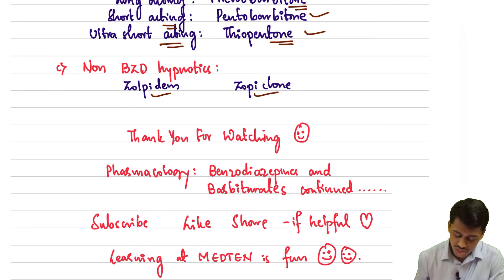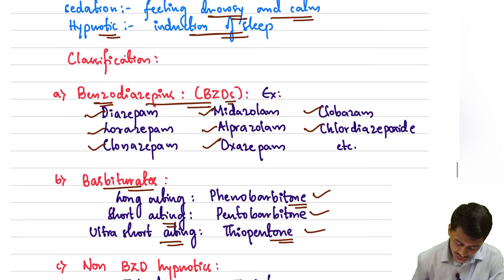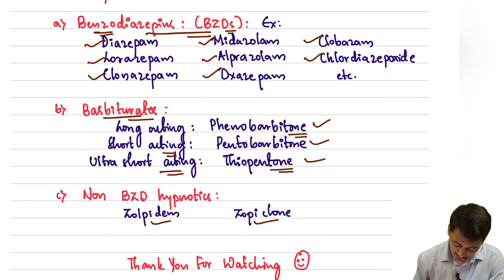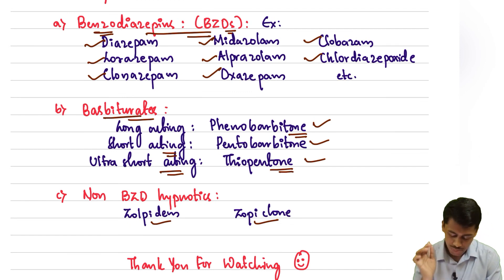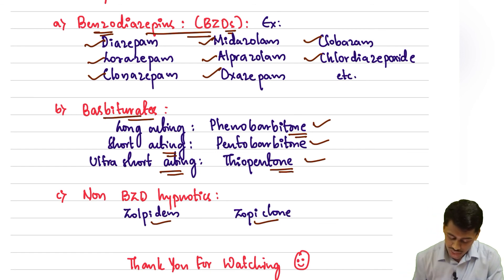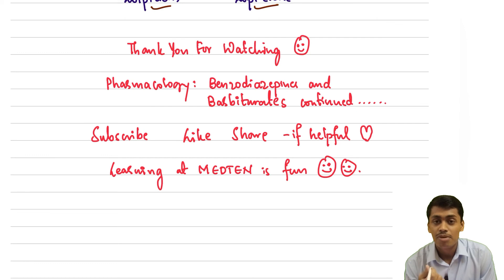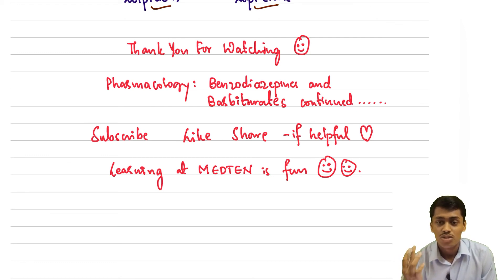So this is about the classifications of sedatives and hypnotics: benzodiazepines, barbiturates, and non-benzodiazepine hypnotics. We will have separate videos on benzodiazepines and barbiturates. Thank you for watching the video till the end — make sure to subscribe, hit the like button, and share this lecture with others who want to learn more about pharmacology. I'll see you in the next video, bye!